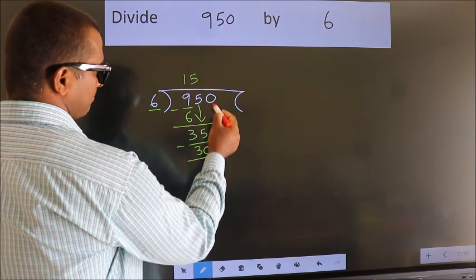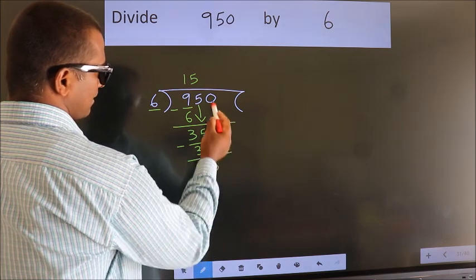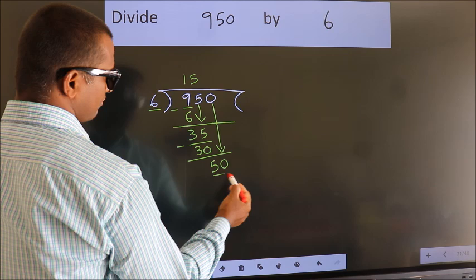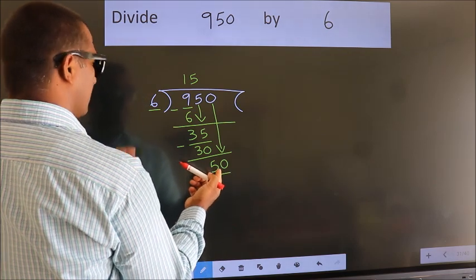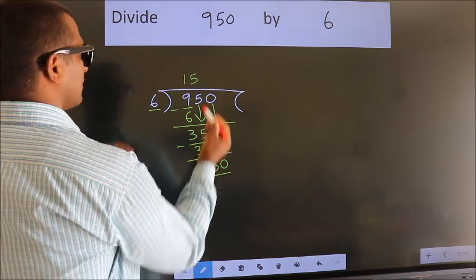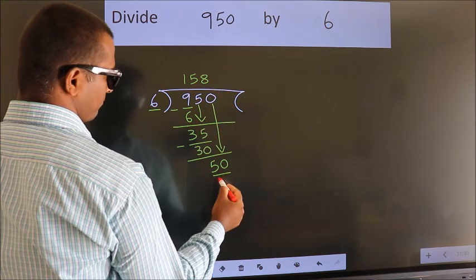After this, bring down the beside number. 0 down, so 50. A number close to 50 in the 6 table is 6 eights 48.